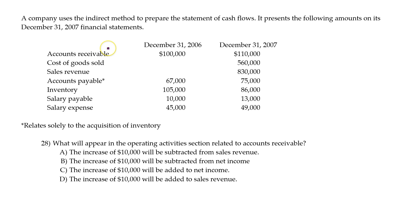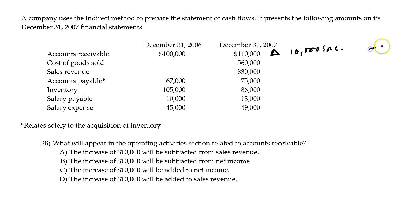What we're looking for are changes in current assets and current liabilities, because those add or subtract from net income in the operating activity section. Accounts receivable went from 100,000 to 110,000. That change is 10,000 and it's an increase. We subtract increases in current assets, so on the statement of cash flows we would subtract 10,000 for this increase in accounts receivable.